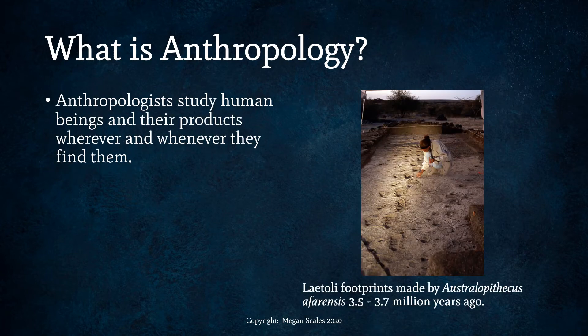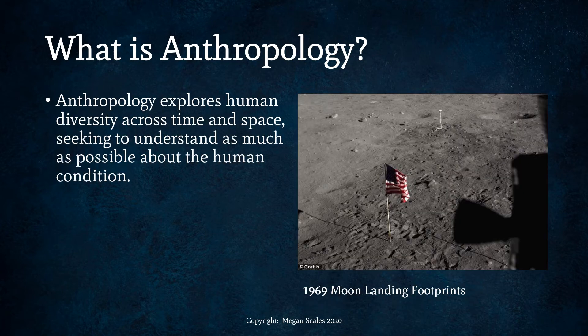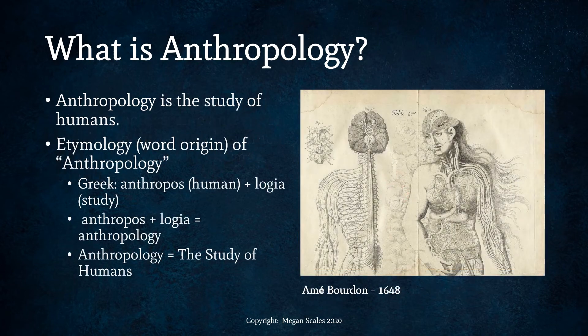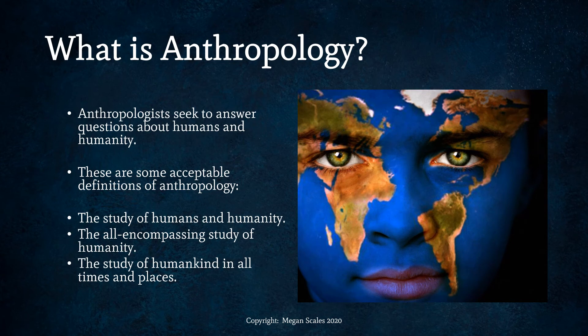Anthropology is the study of humans. Anthropologists study human beings and their products wherever and whenever they find them. Anthropology explores human diversity across time and space, seeking to understand as much as possible about the human condition. The word anthropology actually means 'human study' — anthropos and logia. Anthropologists seek to understand questions about humans and humanity. Some acceptable definitions include: the study of humans and humanity, the all-encompassing study of humanity, and the study of humankind in all times and places.